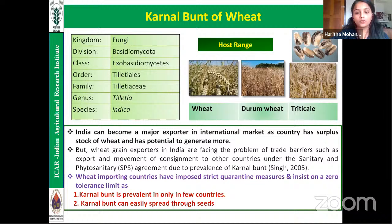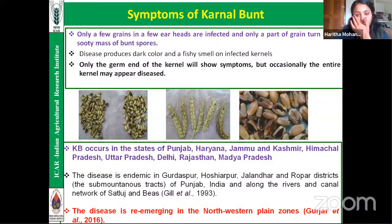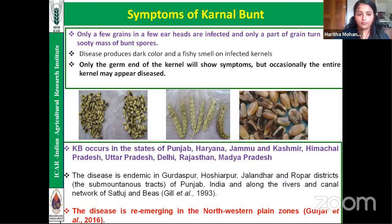India faces trade barriers in wheat exports under the Sanitary and Phytosanitary Agreement due to the prevalence of Karnal bunt. Wheat-importing countries have imposed strict quarantine measures with a zero-tolerance limit because Karnal bunt can be easily transferred through seeds. Key symptoms include only a few grains in a head being infected, partial conversion of grain into a sooty mass of teliospores, a fishy smell from infected kernels, and symptoms primarily at the germ end of the kernel, though occasionally the entire kernel is affected.